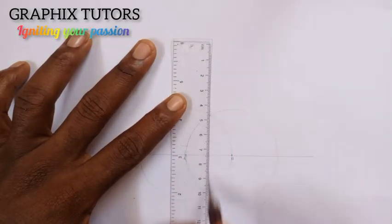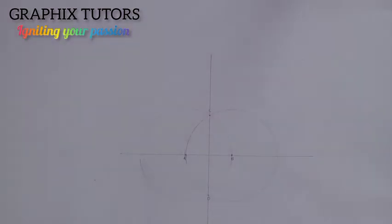Now the next thing I'm going to do, with the same radius I did not adjust, which is the same as A B, I'll place it at D, this point D here. Now I'm going to draw another circle.